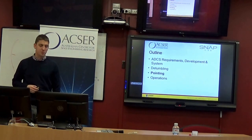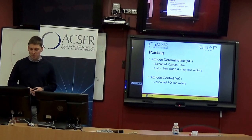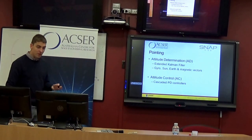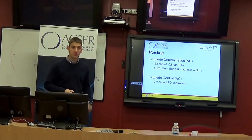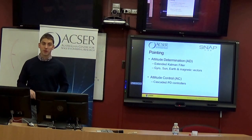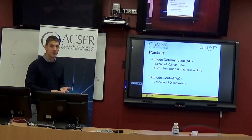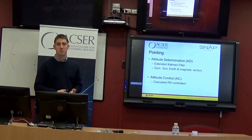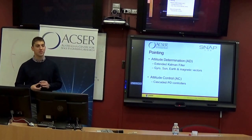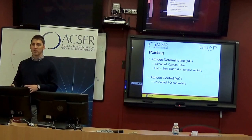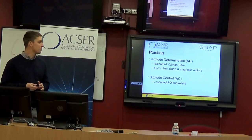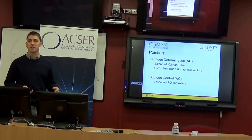Moving on to pointing. We split the pointing problem into two: determining the attitude and controlling the attitude. To determine attitude we use an extended Kalman filter with all the sensors mentioned — gyro, sun vector, Earth vector from CubeSense, and magnetic vector from the magnetometers. The attitude controller is based on a cascaded PID structure, though we disabled the integral branch in software — it's still there if we decide to use it later.